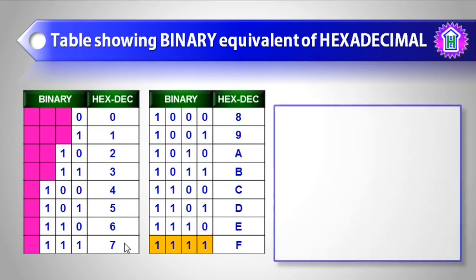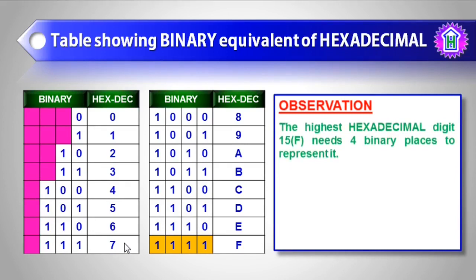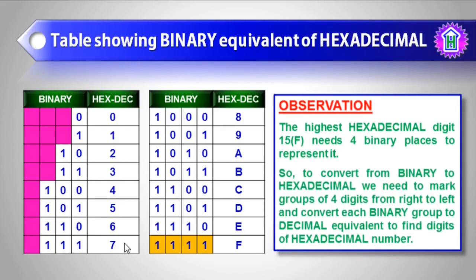Let us summarize our observation. The highest hexadecimal digit, which is 15 represented by F, needs only four binary places to represent it. So to convert binary to hexadecimal, we need to mark groups of four digits from right to left and convert each binary group to decimal equivalent to find the hexadecimal numbers.